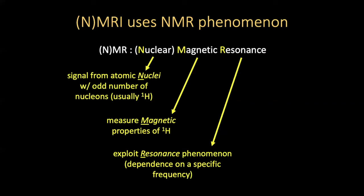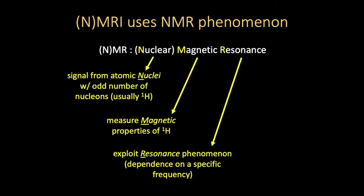We exploit a resonance phenomenon where we have a dependence on a specific frequency. This is NMR, and I'm going to go into each of these components in a little bit more detail. MRI uses NMR to measure nuclei, specifically hydrogen most predominantly. This is just to say that for the number of water molecules we saw earlier, there are two hydrogen atoms for every water molecule, so we're essentially doubling our signal sensitivity.